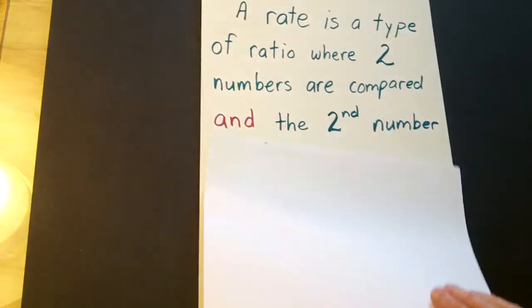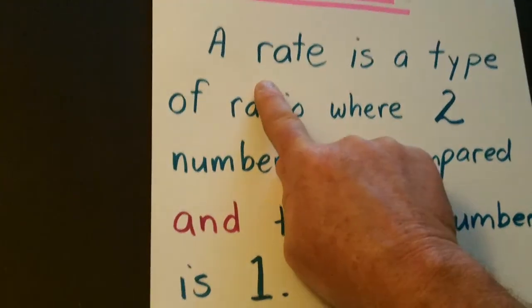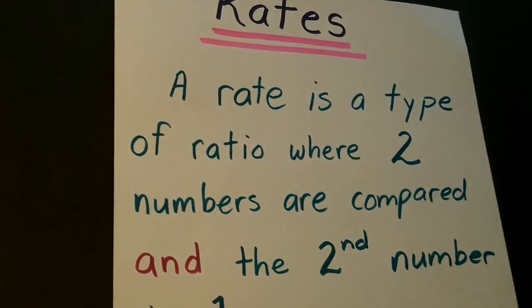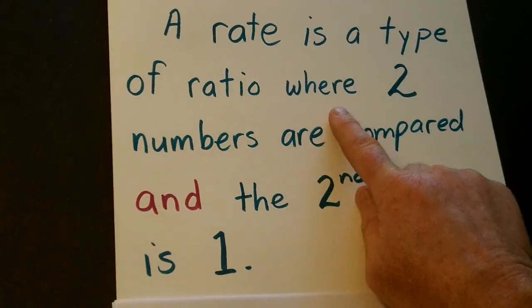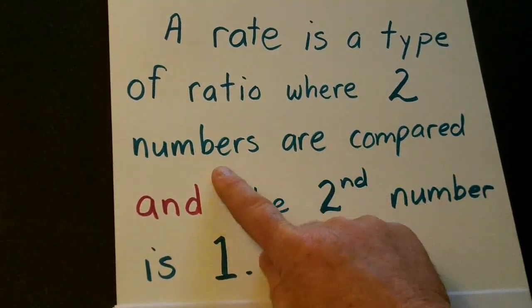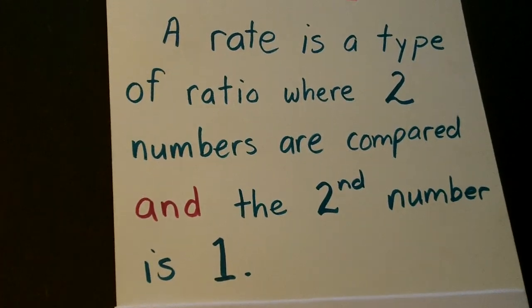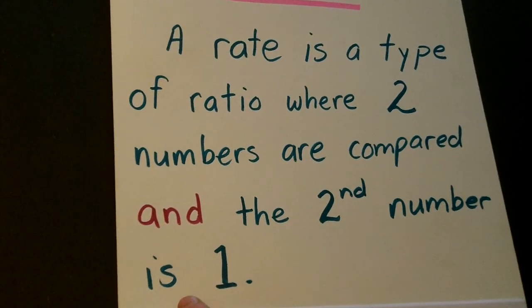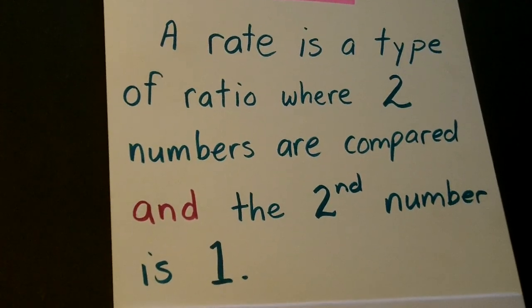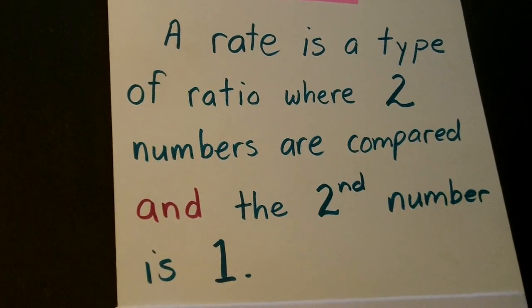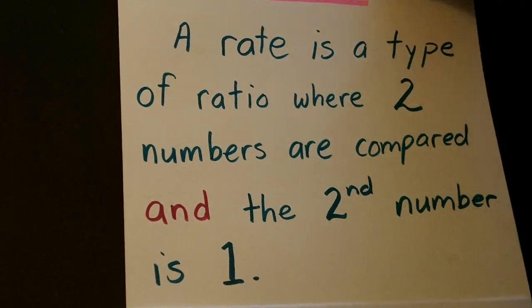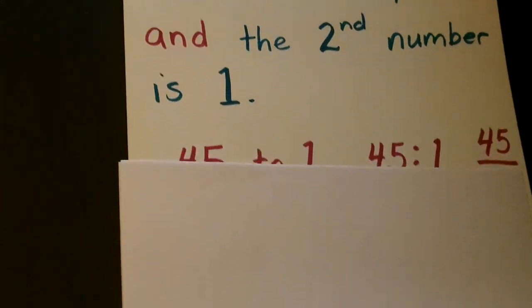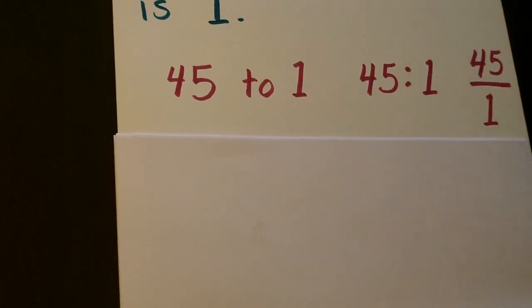Here is our standard definition: a rate is a type of ratio where two numbers are compared and the second number is one. Remember how a ratio was a comparison of two numbers — a rate is the same, but that second number is always one.